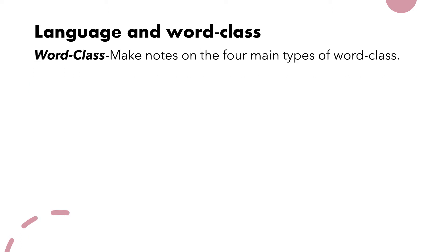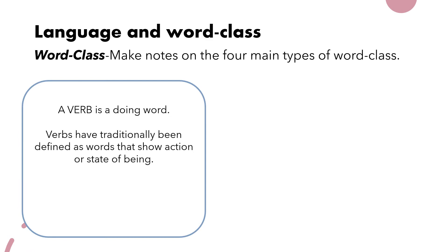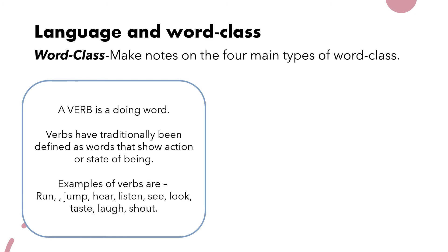Now we're going to go through the four main types of word class, so it might be useful to make some notes. The first one is verbs. A verb is a doing word. Verbs have traditionally been defined as words that show an action or a state of being. Examples include words like run, jump, hear, listen, see, look, taste, laugh, and shout.